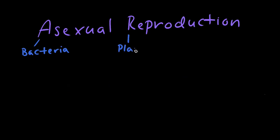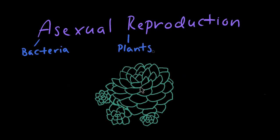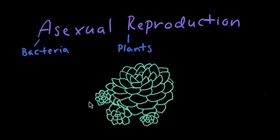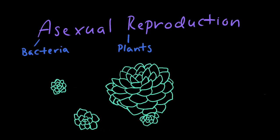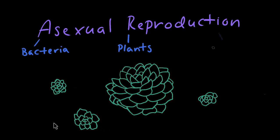Plants are able to reproduce asexually too. For example, some plants grow their offspring off of themselves. In many succulents, you can see baby plants growing off of their parent plant. These babies have the same genes as their parent plant and can grow on their own if you remove them and plant them in soil.